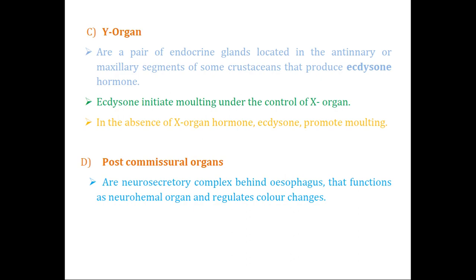The Y-organ is a pair of endocrine glands located in the antennal or maxillary segments of some crustaceans. The Y-organ produces ecdysone. As discussed in the X-organ functions, ecdysone is inhibited by X-organ hormones. Ecdysone's function is to initiate molting, but only when the X-organ hormone is absent. So ecdysone activity is under the control of the X-organ — in the absence of X-organ hormone, ecdysone promotes molting.